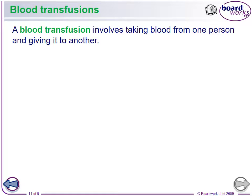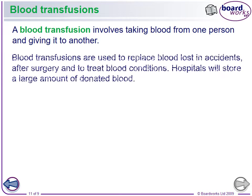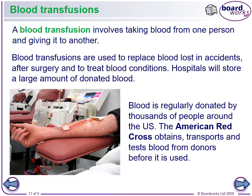Let's talk about blood transfusions. Blood transfusions involve taking blood from one person and giving it to another. They are used to replace blood lost in accidents, after surgery, and to treat blood conditions. Hospitals store a large amount of donated blood on hand, regularly donated by thousands of people around the U.S. The American Red Cross obtains, transports, and tests blood from donors before it's used.